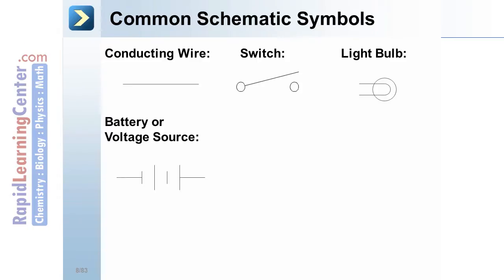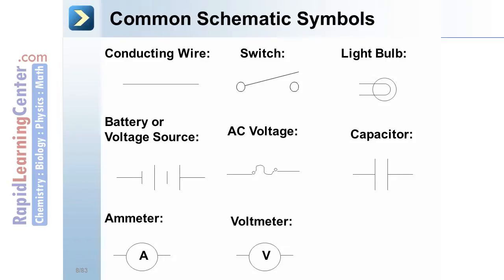A battery or voltage source is drawn as uneven lines. An AC voltage is a curve. A capacitor, two parallel lines. An ammeter is the letter A. And a voltmeter is the letter V. Finally, a resistor is a jagged or sawtooth-like line.